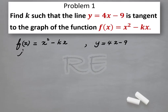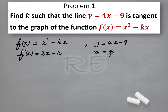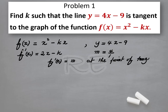At the point of tangency, the slope of the tangent line is equal to the slope of the function. The slope of the function will be 2x minus k. That slope is equal to the derivative of the function. And the slope of the tangent line is 4 over 1. So y equals mx plus b, and m is 4. Therefore f prime of x is equal to m.